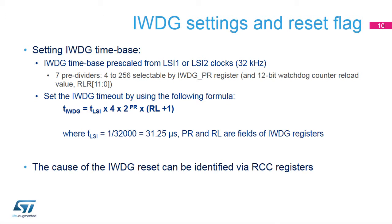The IWDG timebase is pre-scaled from the LSI1 or LSI2 clock at 32 kHz. The IWDG PR prescaler register can divide the LSI clock frequency by 4 up to 256. The watchdog counter reload value is a 12-bit value written in the IWDG RLR register. A formula can be used to determine the independent watchdog timeout. The independent watchdog time is based on the LSI period and its prescaler, as well as the selected watchdog counter reload value. Note that the microcontroller's reset and clock controller, or RCC, provides registers identifying the source of the reset. In this way, the application can check if a reset is caused by an independent watchdog.